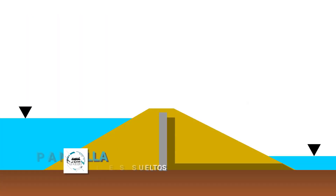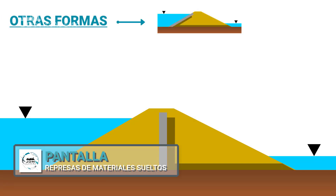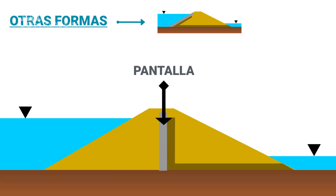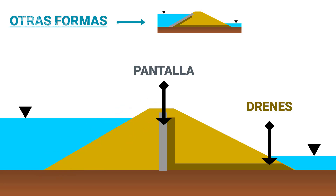Represas de pantalla o diafragma (Screen or diaphragm dams) — like the previous type, they have a differentiated element to ensure impermeability, but in this case it is not a natural material; instead they have a screen. The screen is usually placed on the upstream face, although it can also be interior. It is generally executed with bituminous material or concrete, although concrete screens have the disadvantage of possible cracking due to settlement.